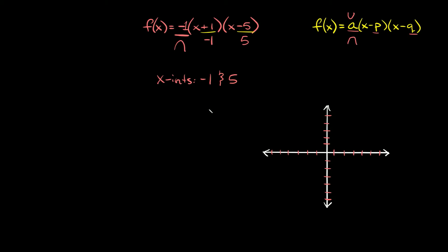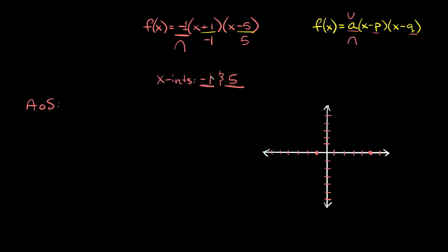X-intercepts are the spots where the parabola crosses the x-axis, so we have one at negative 1 and one at positive 5 — the parabola goes through both of those points. The parabola opens down. Now to find the vertex there's a two-step process. First we find the axis of symmetry by adding the x-intercepts and dividing by 2: negative 1 plus 5 equals 4, and 4 over 2 equals 2. So the axis of symmetry is at x equals 2.